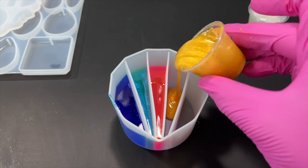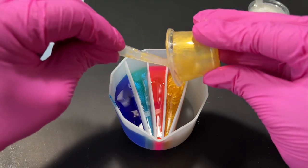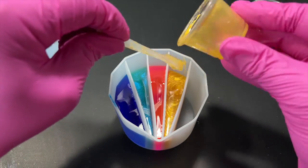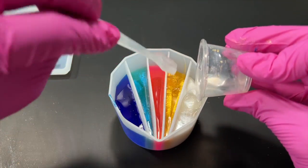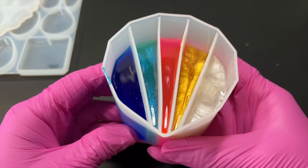Once my colors were mixed up, it was time to put them into the split cup. Now you can mix your pigments in the resin in the split cup, but because I want to make sure that I had one ounce of each color, I mix them in these smaller one ounce cups.